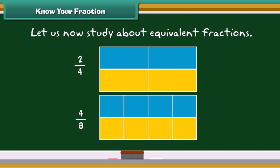The blue colored parts of both the boxes are same. This means, two by four must be same as four by eight. So, two by four and four by eight are equivalent fractions.